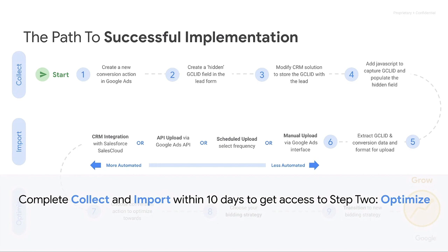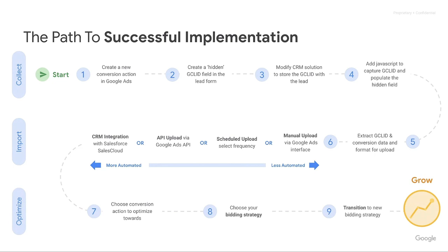Once you do get the new pieces of information in the account, it opens a lot more doors on how you can optimize across the account. So definitely try to get it done within the 10 days so you can get into that optimize session — there's loads of great content there. I actually think this is probably the most important slide we're going to present. I would recommend taking a screenshot of it — or even printing it off and putting it on your desk — and emailing it to everybody involved in the implementation on your team. These are the nine critical steps from creating a conversion action all the way to bidding to this imported conversion.